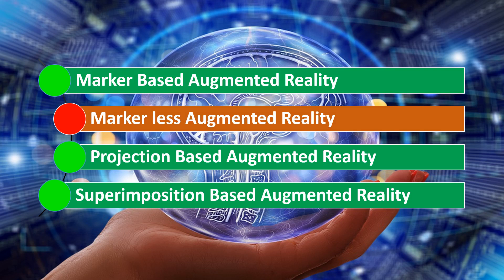Marker-less augmented reality is also called location-based augmented reality. For example, by pointing your phone towards an area you can get various information like restaurants, hospitals, petrol pumps, etc., present around that location.